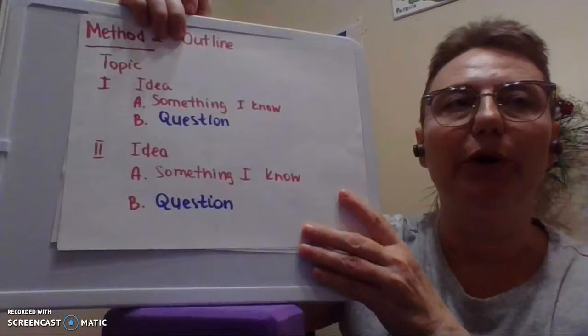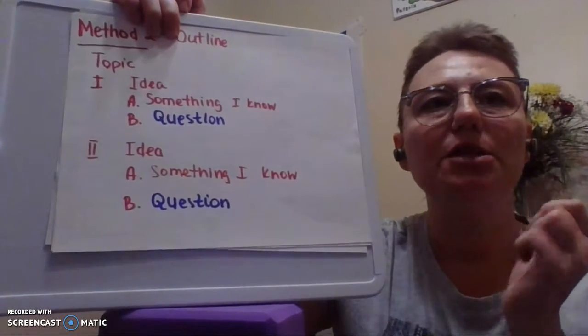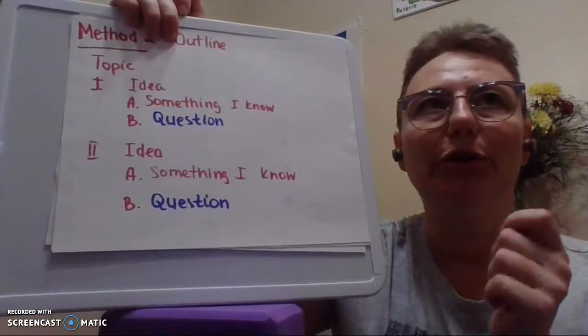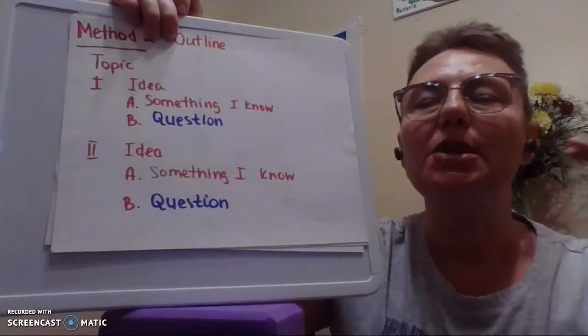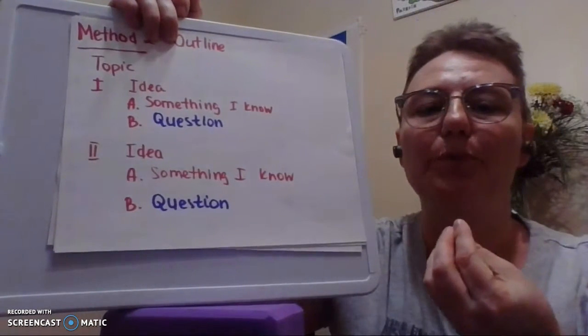The second method that we're going to explore today is the outline method. This is for you linear learners. You like things neat in a line, logical progression, so the outline does it for you.